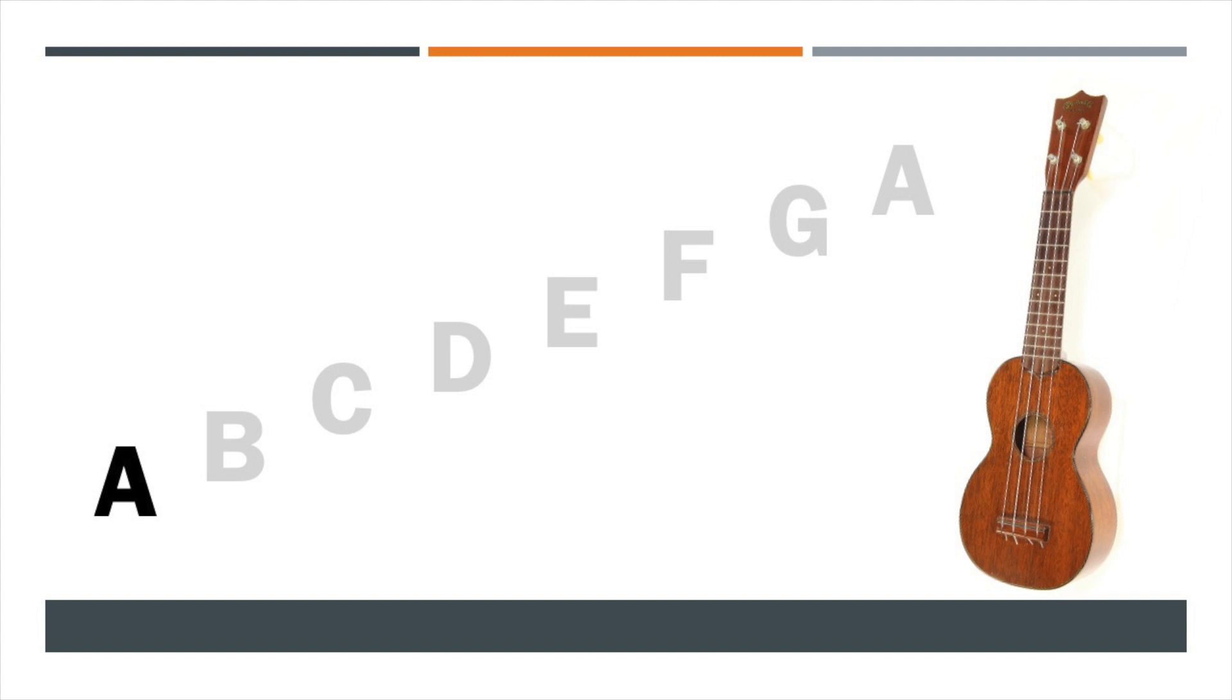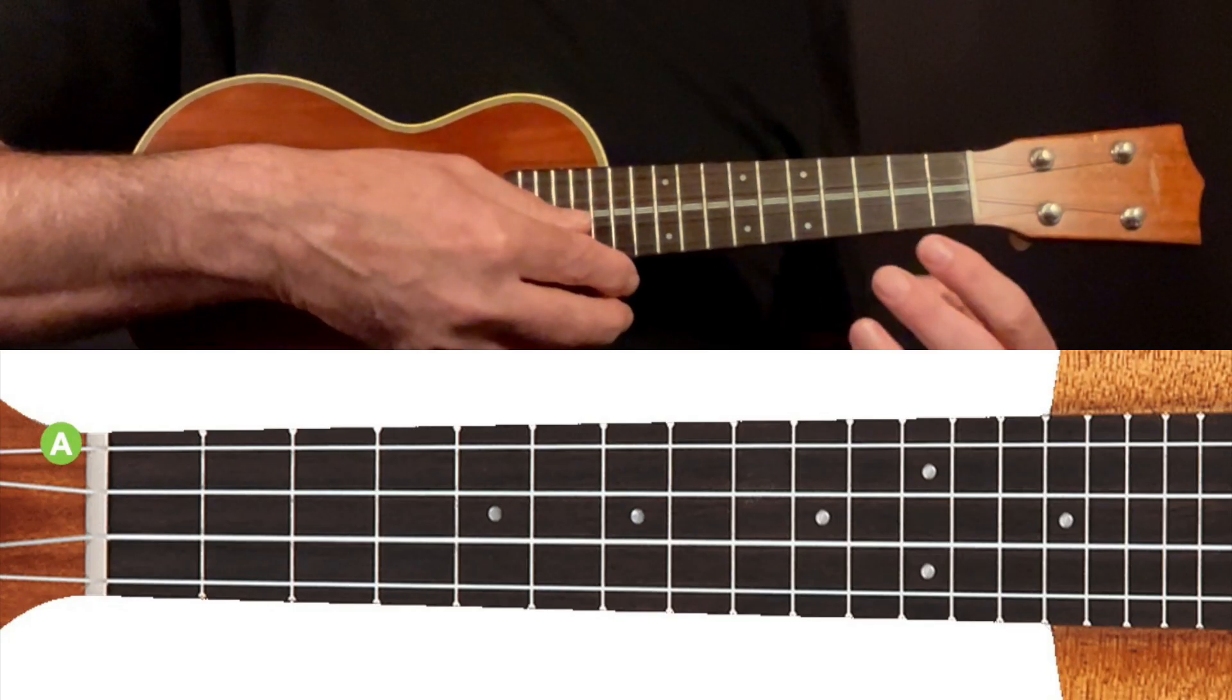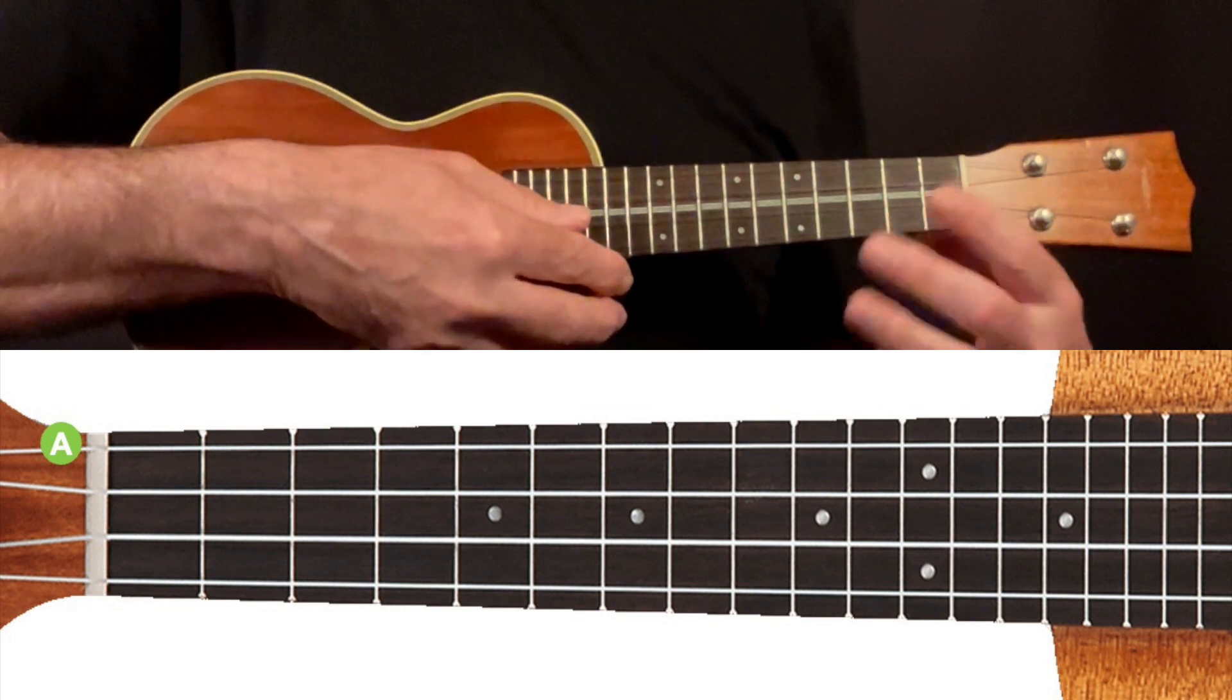So these notes A, B, C, D, E, F and G are what are known as the natural notes. If we were to look at these notes on our ukulele fretboard using just the first string of our ukulele, the string nearest the floor, the A string.